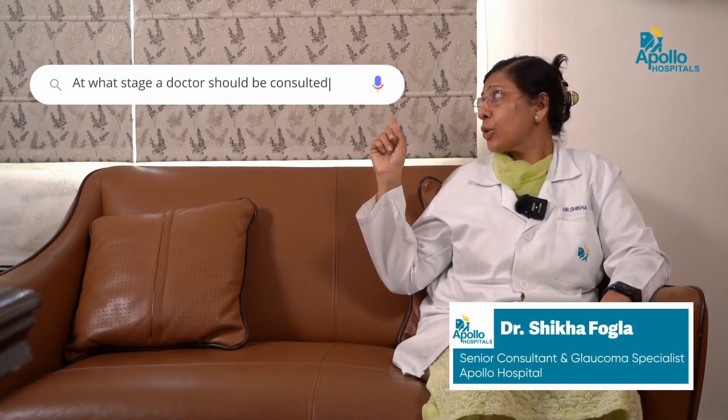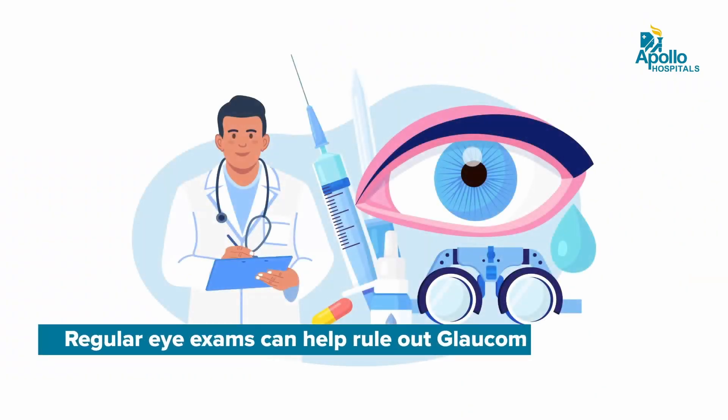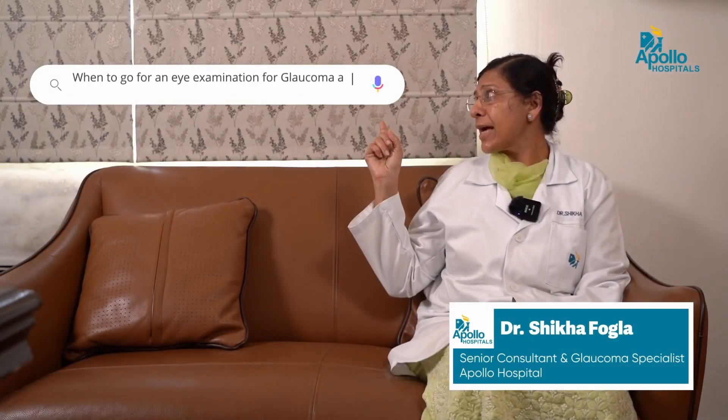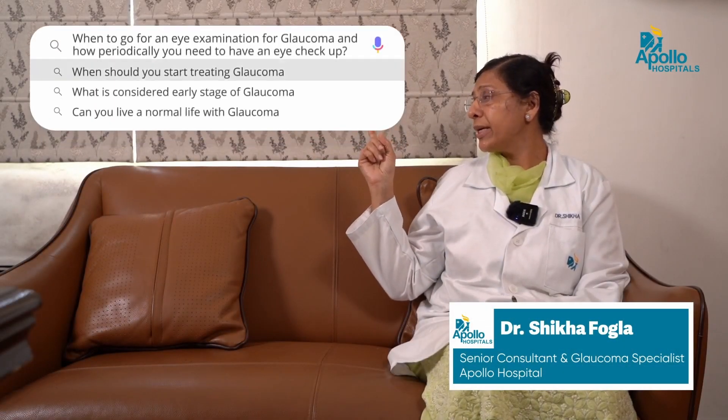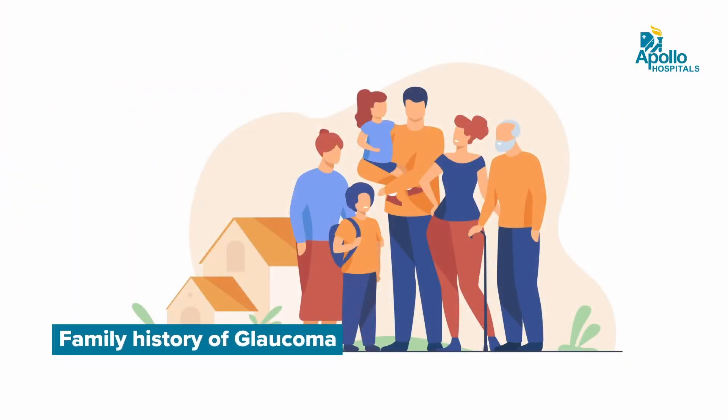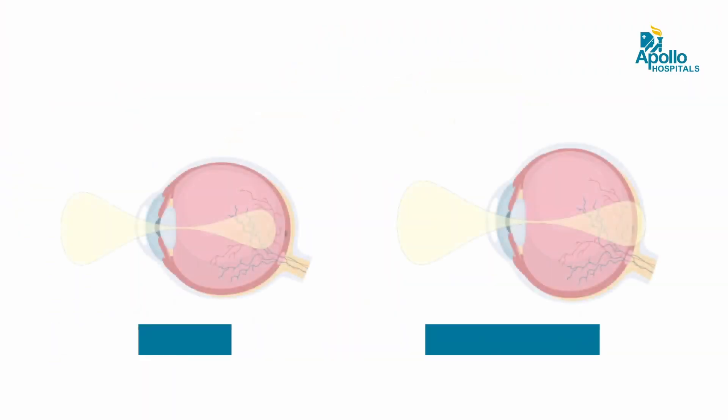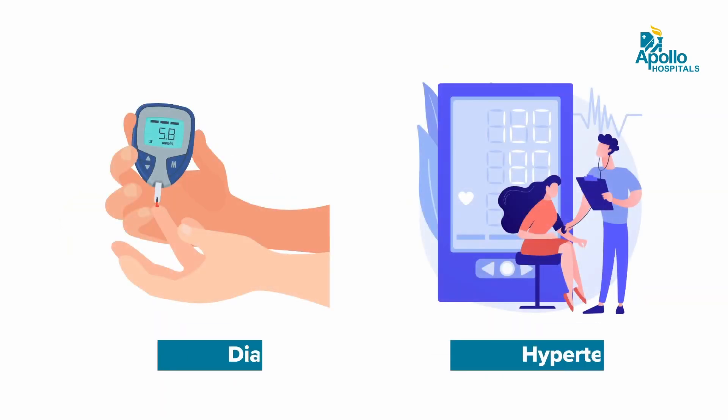At what stage should a doctor be consulted? Anybody with a risk factor should have a complete eye examination to rule out glaucoma. Anybody with a risk factor for developing glaucoma — like family history, myopia, hypermetropia, diabetes, or hypertension — should have an early eye examination to rule out glaucoma.